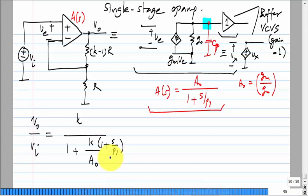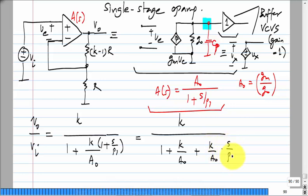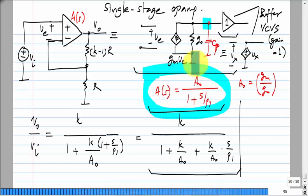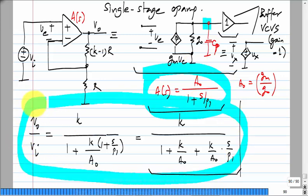Expanding the closed-loop transfer function gives K over (1 + K/A-naught + (K/A-naught)·(S/P1)). The sanity check at S = 0 gives K/(1 + K/A-naught), matching our earlier DC result with relative error K/A-naught. The op-amp gain A(s) is the open-loop transfer function; the amplifier's Vout/Vi is the closed-loop transfer function.